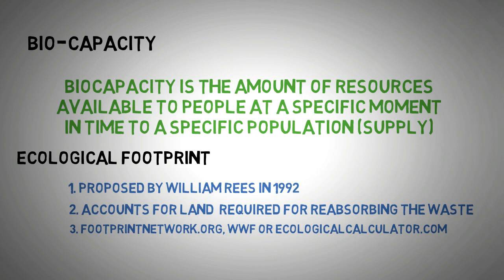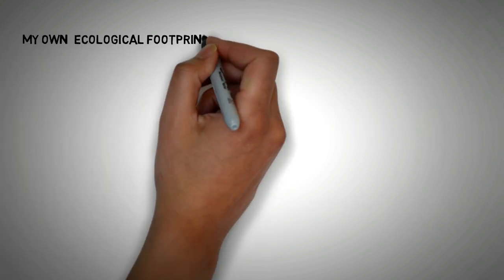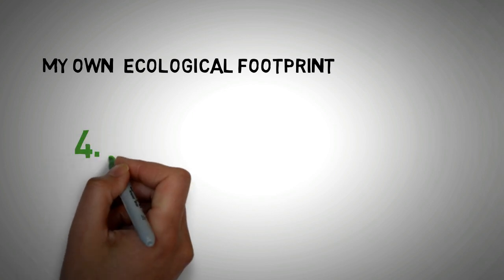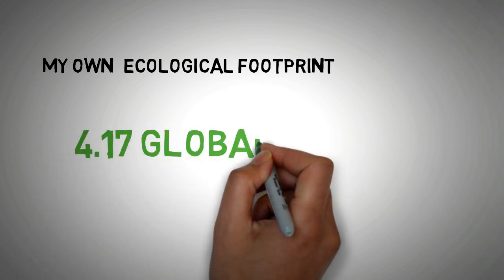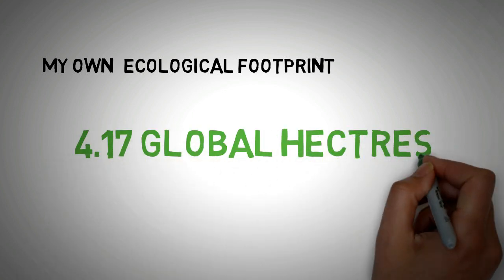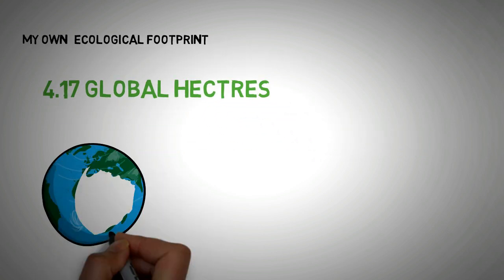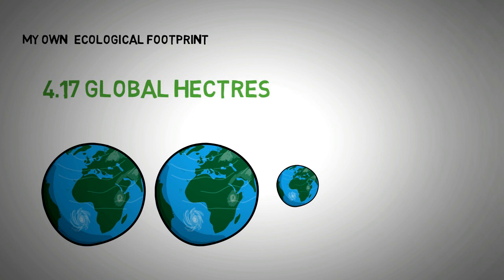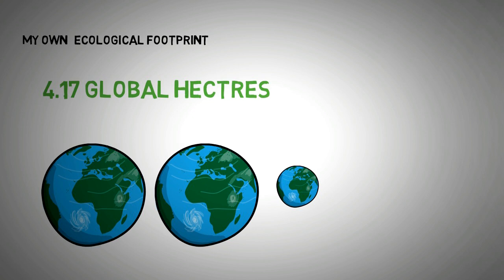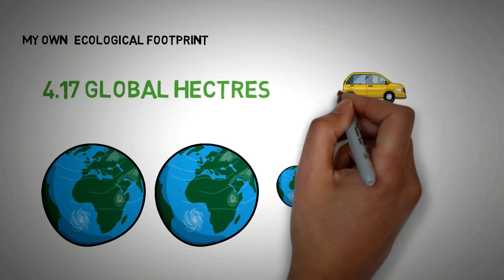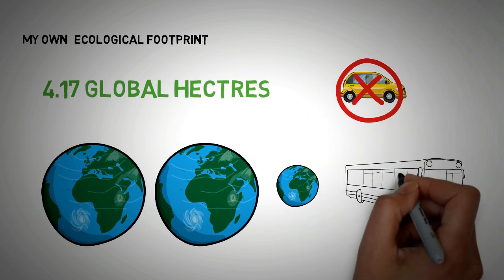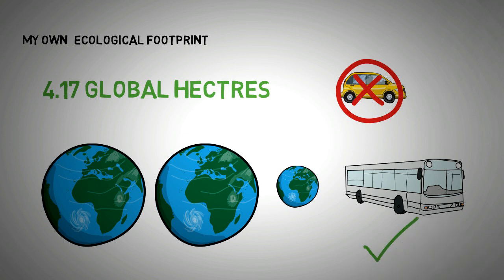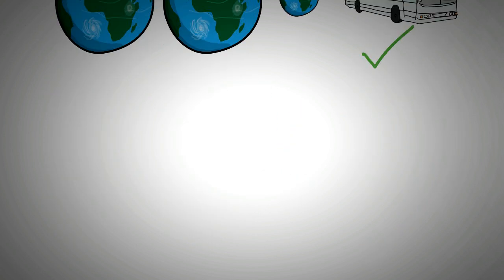So my own ecological footprint came out to be 4.17 global hectares which is a very reasonable estimate using one of these websites. If everyone lived like me, we would require 2.3 planets to sustain ourselves. So this tells me that I really need to alter my lifestyle and usage of public transport would make the biggest difference in my numbers. This figure also tells me that my footprint is 2.3 times the bio-capacity of our planet.